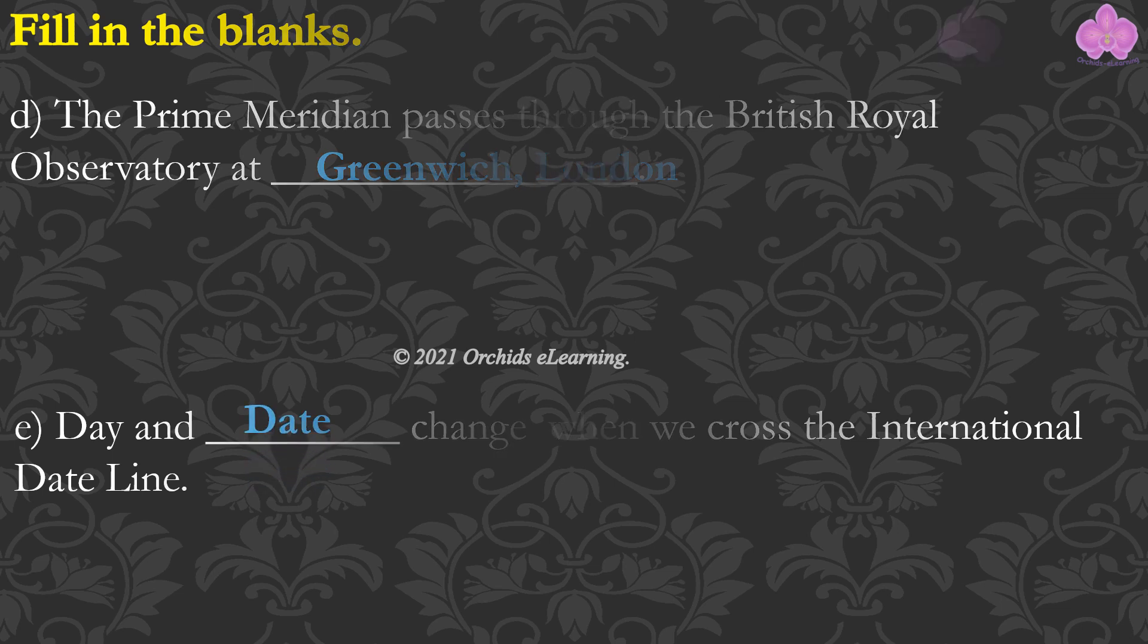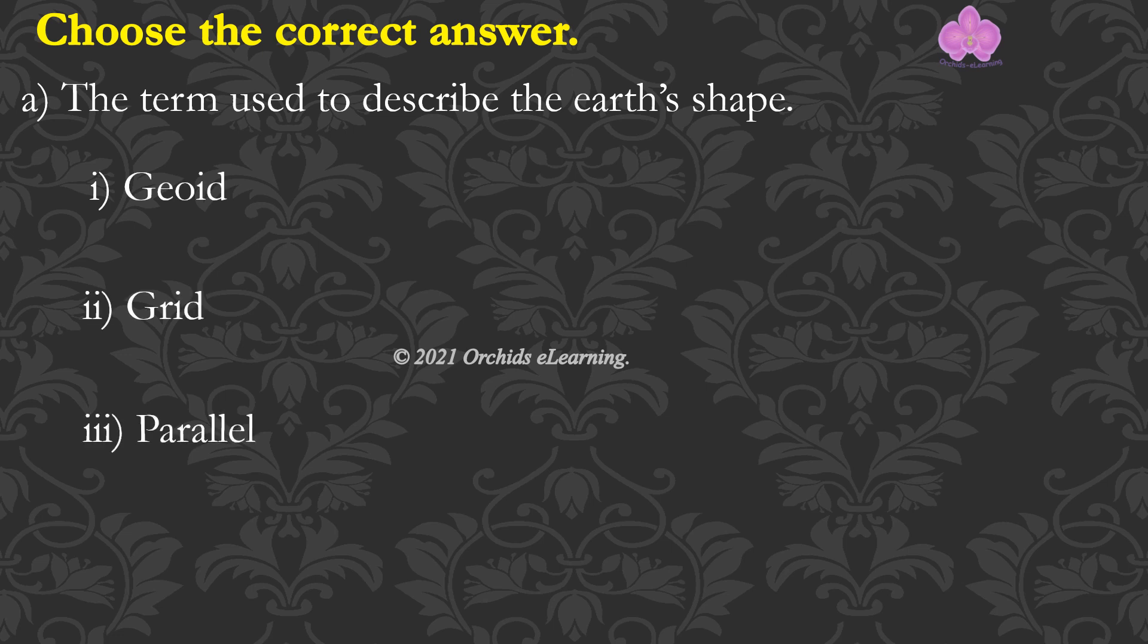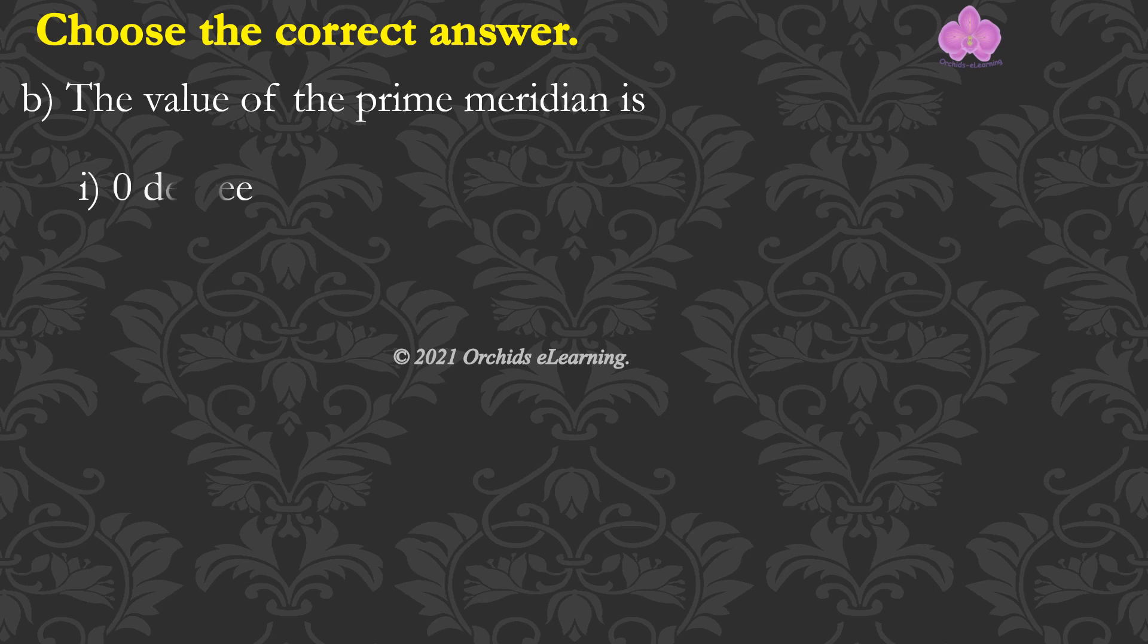Choose the correct answer. The term used to describe the Earth's shape is geoid. The value of the Prime Meridian is zero degree.